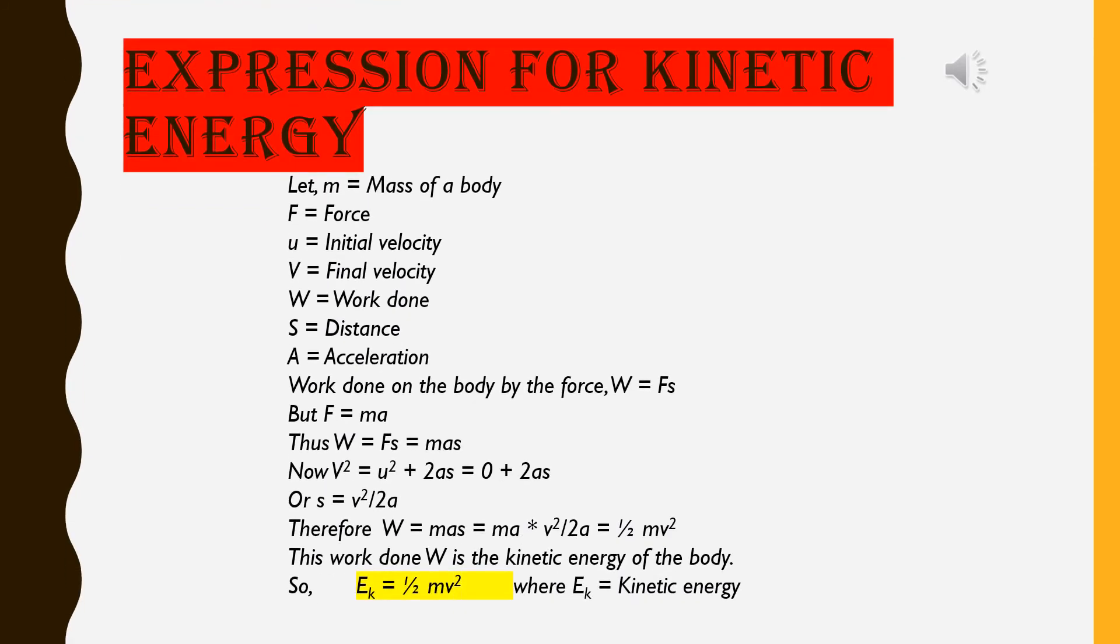Expression for kinetic energy. Let M be mass of a body, F be force, U is equal to initial velocity, V is equal to final velocity, W is equal to work done, S is equal to distance, and acceleration is A. Work done on the body by the force, W is equal to F into S.